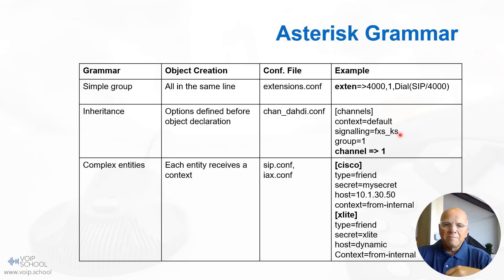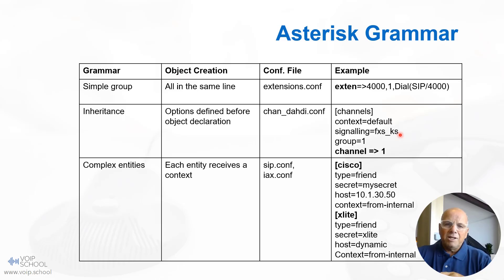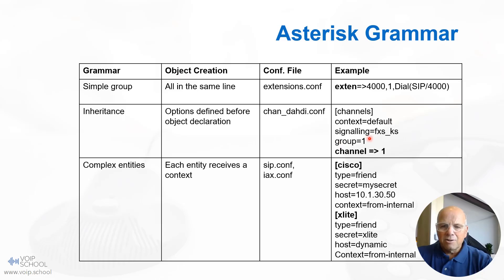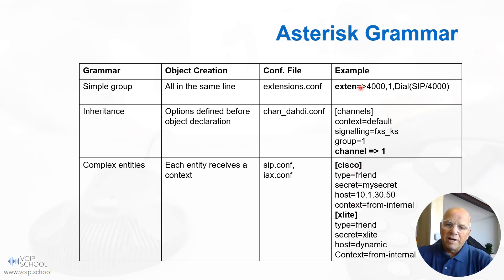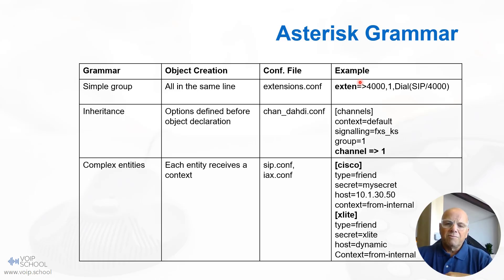The example shows two friend types — Cisco and fxlite — with various parameters like secret, host, context, and type defined for each. Each Asterisk configuration file has a different grammar, so pay attention to the grammar. The most difficult one to understand is the inheritance model: you define everything first, then at the end you set channel one, which will have context default, signaling FXS KS, and group equals one. This is typical of chan_dahdi.conf. The other approach is more intuitive — you declare the object and define all variables for that specific object in a single line. Check the examples to make sure which type applies to your configuration file.